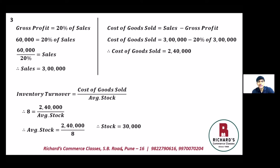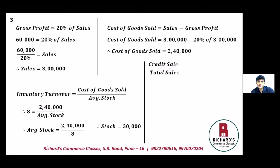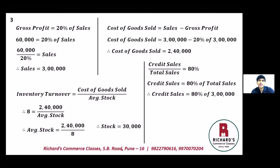The next information given is credit sales to total sales is 80%. So credit sales divided by total sales equals 80%. Cross-multiplying, credit sales equals 80% of total sales. Total sales is three lakhs, so credit sales equals 80% of three lakhs, which is two lakh forty thousand.